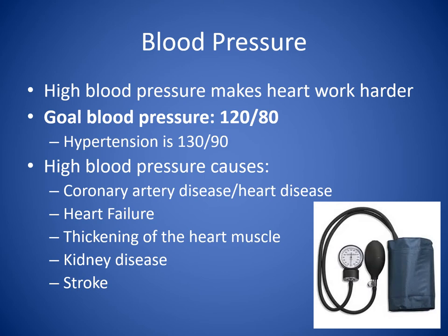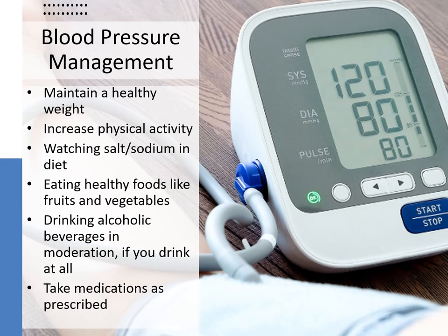High blood pressure is what we call a silent killer. High blood pressure makes your heart have to work that much harder. Coronary artery disease and atherosclerosis will show through high blood pressure. It can lead to heart failure, thickening of the heart muscle, kidney disease, and stroke. Keeping your blood pressure in a normal range — a goal of 120 over 80, possibly lower at 110 over 70 — is important. Hypertension is now diagnosed at 130 over 90. To manage your blood pressure: maintain a healthy weight, increase physical activity, watch your salt and sodium intake, eat healthy foods, drink alcoholic beverages in moderation, and take medications as prescribed.